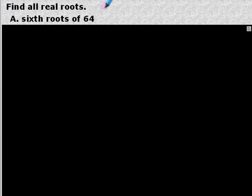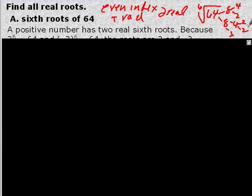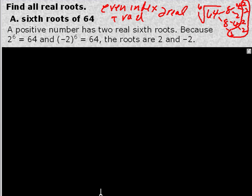Find all real roots — sixth root of 64. If we have an even index and a positive radicand, that means we're going to have two real roots. Factoring 64: 8 times 8, 4 times 2, 4 times 2, 2 times 2, 2 times 2 — that gives six 2's. The sixth root means we need six of the same factor. So the sixth root of 64 is positive 2 and also negative 2, because negative 2 to the sixth power is also positive 64.